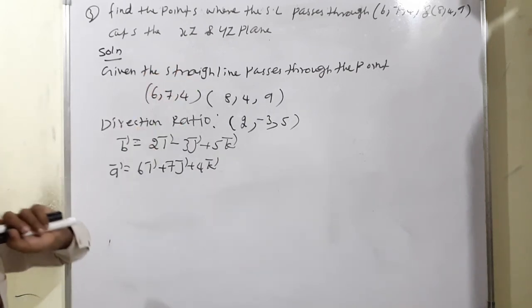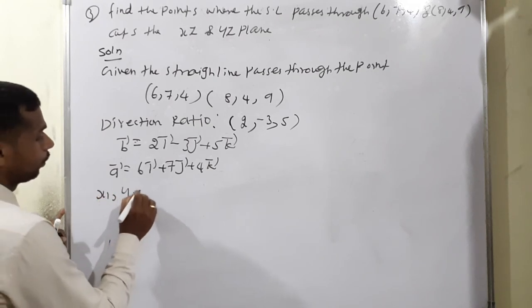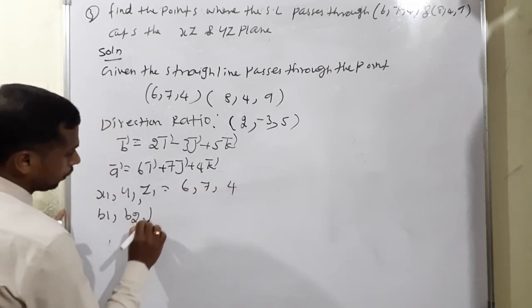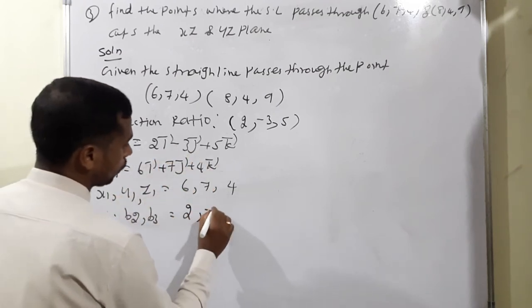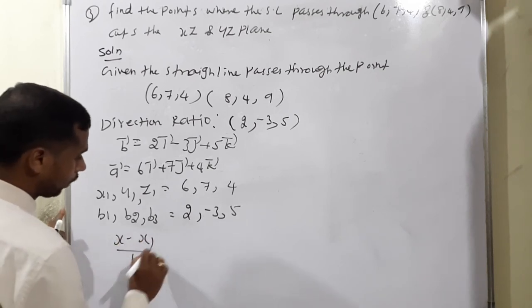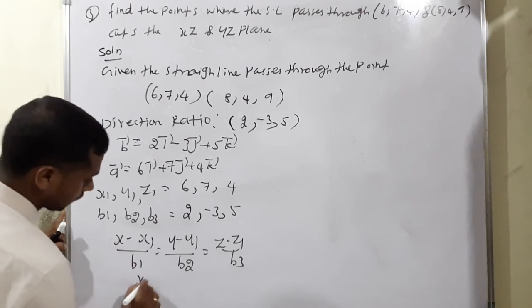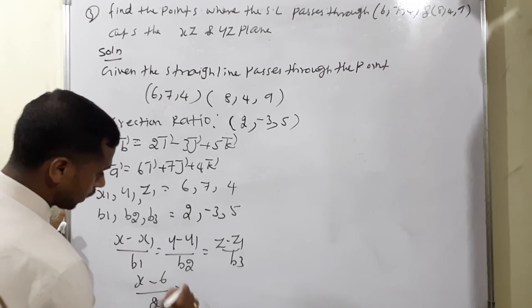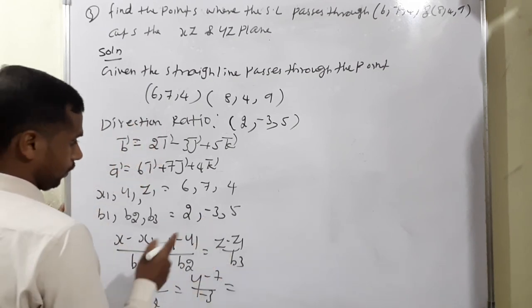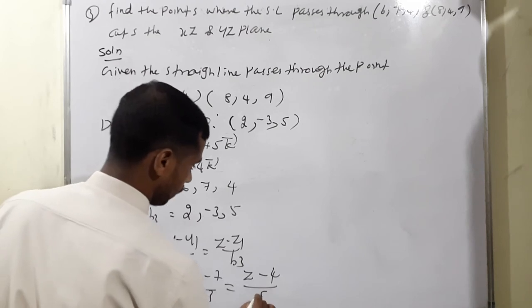We need Cartesian equation for the xz and yz planes. With x1, y1, z1 equals 6, 7, 4 and b1, b2, b3 equals 2, negative 3, 5, the formula gives: x minus 6 by 2 equals y minus 7 by negative 3 equals z minus 4 by 5. Setting each equal to t: x equals 2t plus 6, y equals negative 3t plus 7, z equals 5t plus 4.